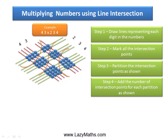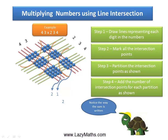The next step is to add the intersection points for each group. This group has 12 intersection points, so we write 1 in the carryover position with 2. The next group has 25 intersection points, so we write 2 in the carryover position and 5. The group on the left of the central line has 18 intersection points, and the group on the far left has 8 intersection points.